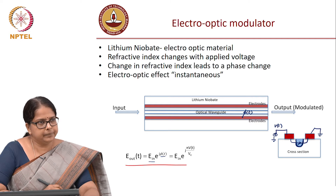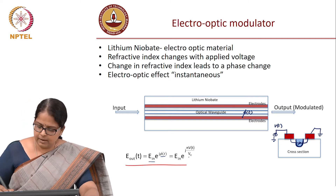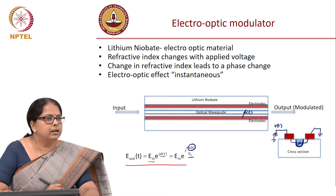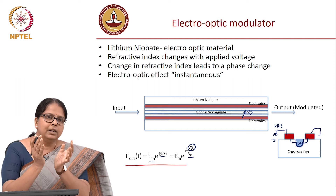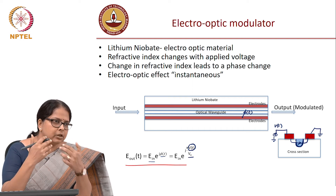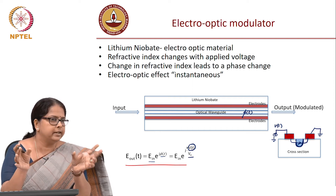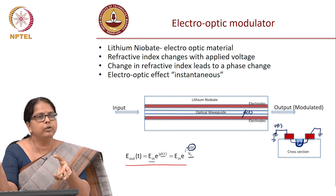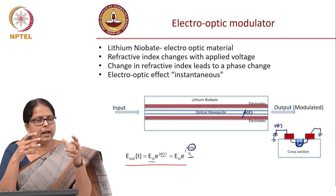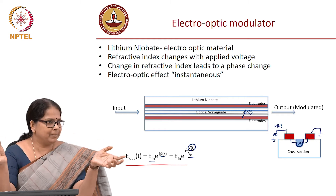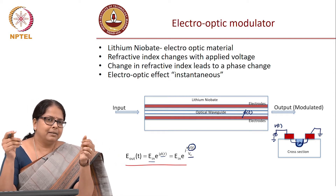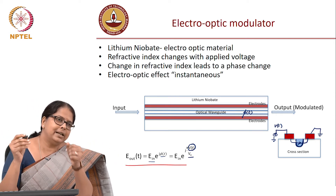We have made a phase modulator, and we must remember that V_pi is the voltage required to produce a phase change of pi. Once you make the modulator, V_pi is decided by how big your waveguide is, what is the interaction cross-section between the electric field and the optical field, and the electro-optic coefficient. From a system perspective, you get a modulator and you can measure V_pi — it is a characteristic available in the data sheet of the instrument.